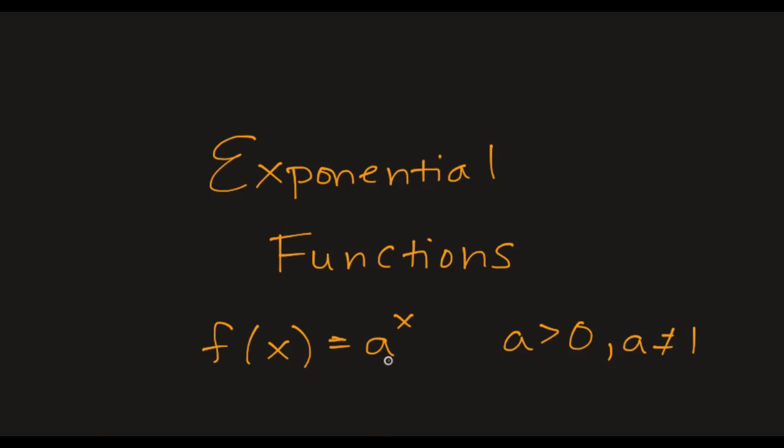We can find the equation of this in general. There could also be a k out front, a constant out front, so I'll add that in there. We can find the general equation of an exponential if we have two points, and then we can use those to find both k and a.